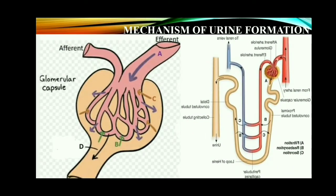Let us discuss step by step. First, glomerular filtration. This glomerular filtration occurs in the glomerulus. It is the first step in urine formation. The blood is filtered in the epithelial tissues of the glomerulus and the Bowman's capsule. The filtrate is called glomerular filtrate. This filtrate consists of both essential and non-essential substances present in the blood. This glomerular filtration is also called ultrafiltration.